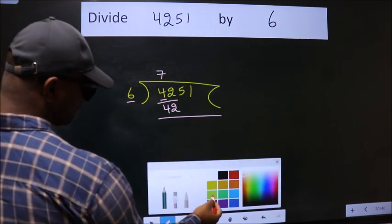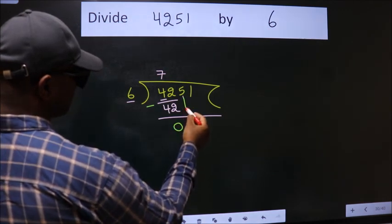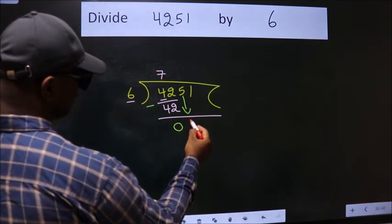Now, we should subtract. We get 0. After this, bring down the beside number. So, 5 down.